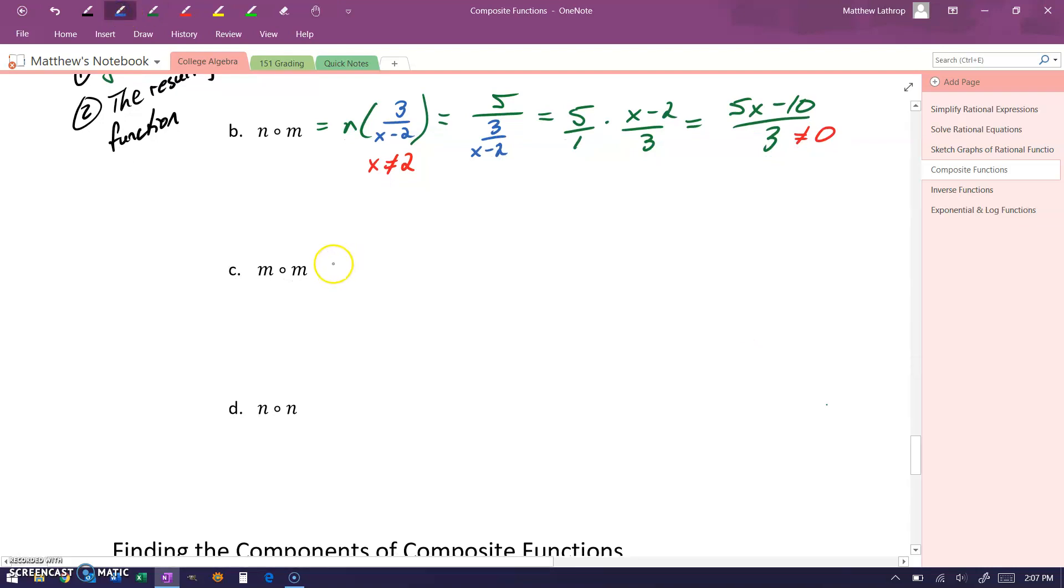If we look at taking the function m composed with itself, that means we would want to take m of 3 over x minus 2. So we get the domain restriction that x cannot be equal to 2. And we start off by establishing the function 3 over 3 over x minus 2 minus 2.